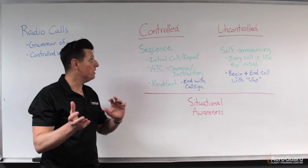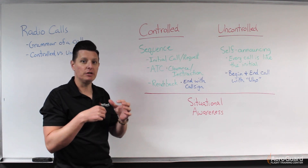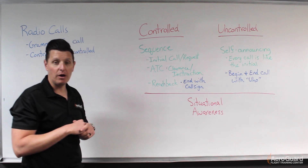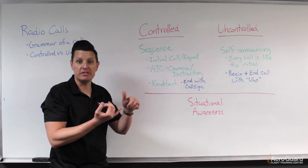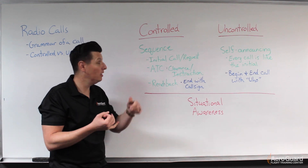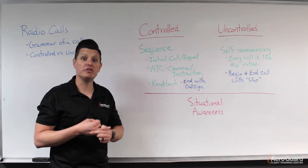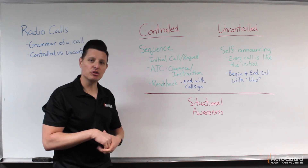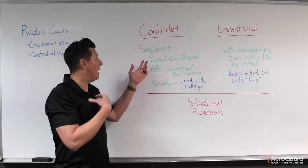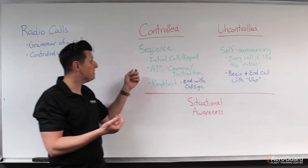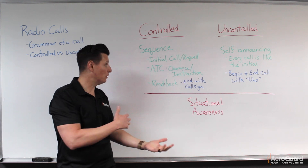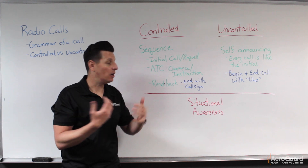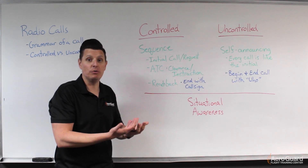Now let's jump into the differences in radio calls between controlled environments with ATC and uncontrolled environments. For controlled environments — such as airports with a control tower, ground control, approach control, or center control — there's a sequence to how radio calls are made. It starts with us making an initial call or request. Then the controller replies with a clearance or instruction. Then we make a readback, which is us confirming we heard the correct clearance by repeating it back to ATC.